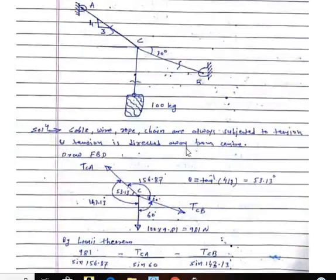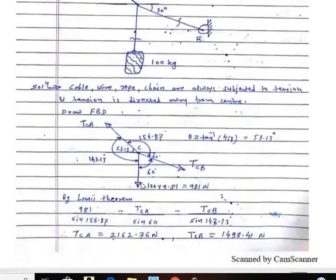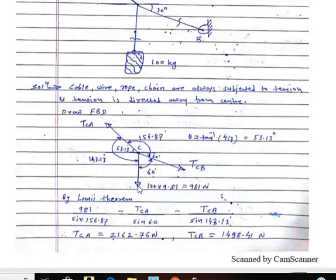Tension is directed away from the center. For drawing the free body diagrams, we have to cut this cable and show the tension force acting in it. This is the free body diagram. Cable AC is written as CA here. T_CA means tension in cable CA, T_CB means tension in cable CB. The third is the mass, that is 100 × 9.81 = 981 Newton.